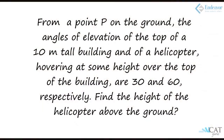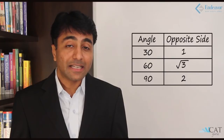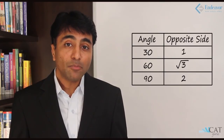Another question on height and distance: point P forms an angle of elevation of 30 degrees to a 10-meter tall building, and a helicopter directly above the building has an angle of elevation of 60 degrees from the same point P. We need to find the height of the helicopter from the ground. Using the 30-60-90 ratio, the side opposite 30 degrees is 10 meters (the building height), so the side opposite 60 degrees — the horizontal distance from P to the foot of the building — is 10√3 meters.